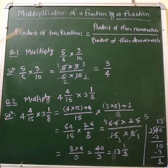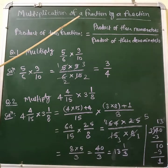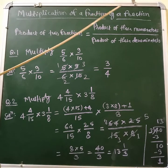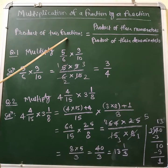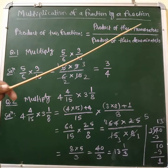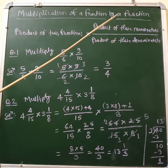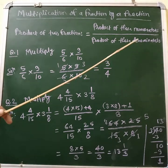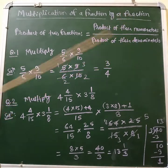Hello everyone, today we will learn multiplication of a fraction by a fraction. Multiplication of a fraction by a fraction is the product of two fractions. The product of two fractions is equal to the product of their numerators divided by the product of their denominators. Let us see examples.